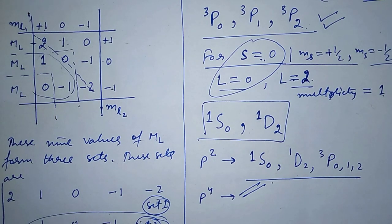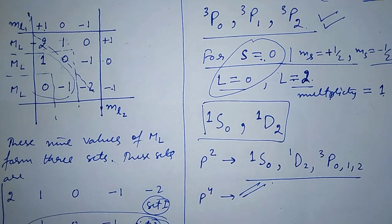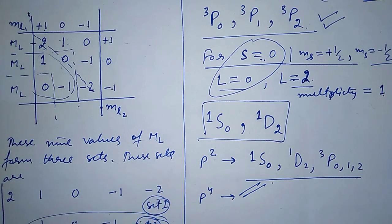So for two equivalent p electrons — the p² configuration — the spectral terms are ¹S₀, ¹D₂, ³P₀, ³P₁, and ³P₂. Remember that the p⁴ configuration has exactly the same set of terms. In the next lecture we will discuss the ordering of these terms and fine structure levels according to their energies, and plot them on an energy level diagram.